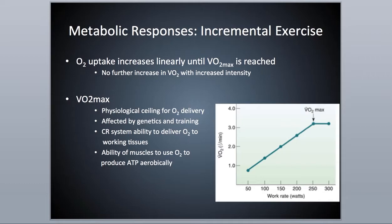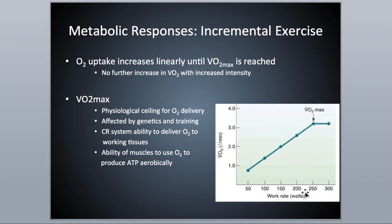Looking at incremental exercise and the concept of VO2 max — the maximal volume of oxygen you're able to consume and utilize. Oxygen uptake increases linearly as you increase intensity, in proportion to that increase, until you reach your max. When someone reaches their full potential, their VO2 max — in this case looking at wattages going from 250 to 300 watts — the volume of oxygen consumed did not increase even though intensity increased. That's when you know you've reached a true VO2 max: you increased the intensity but VO2 did not increase.